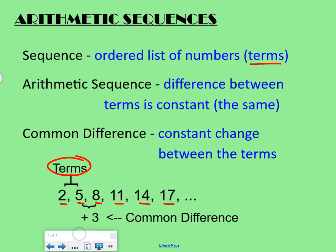First we're going to talk about arithmetic sequences. A sequence is an ordered list of numbers. They're ordered, and we can call those numbers terms. So if we look down here, our terms would be 2, 5, 8, 11, 14, and 17. And then this dot, dot, dot just means it keeps going following that pattern. An arithmetic sequence is the difference between the terms is constant. And constant means the same.